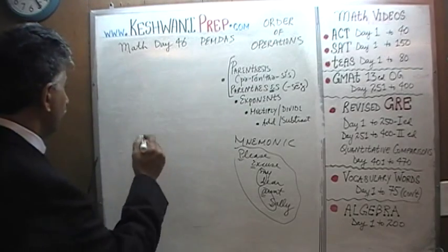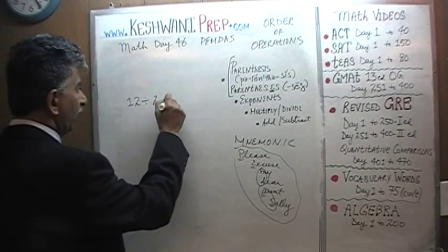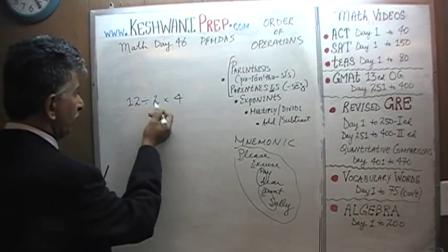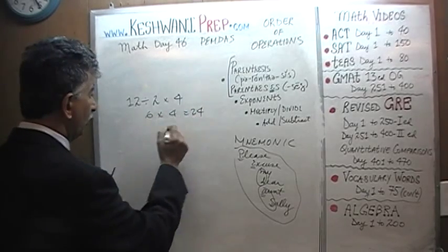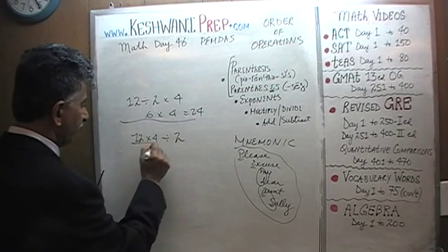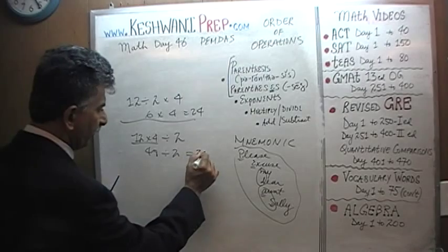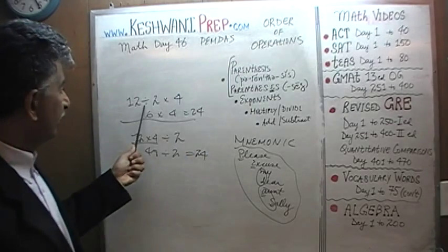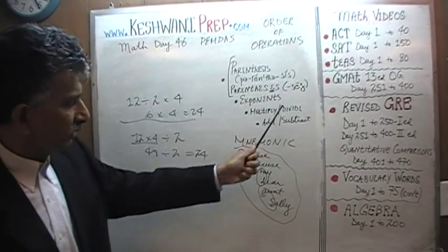For example, if you have 12 divided by 2 times 4, you can do it as 12 ÷ 2 = 6, times 4 = 24. Or you could do 12 × 4 = 48, divided by 2 = 24. As you can see, we get the same answer whether we do division first or multiplication first. They have the same priority which is why they are put together.